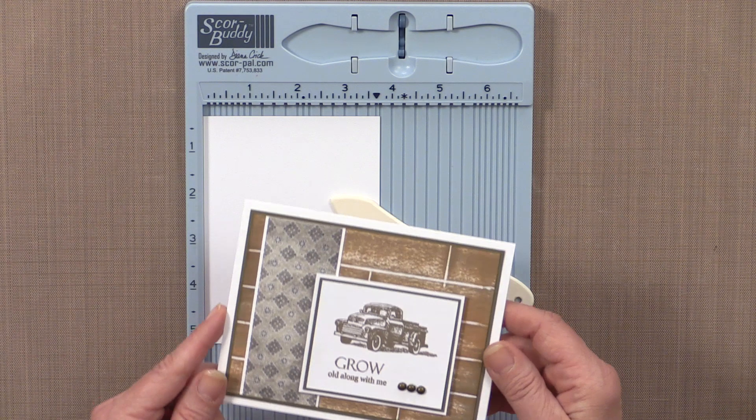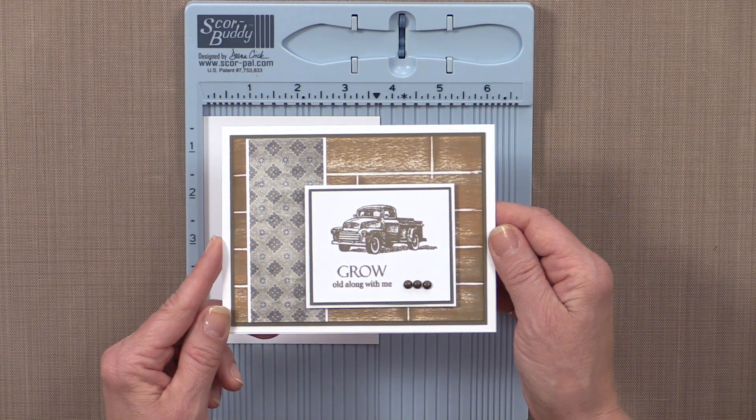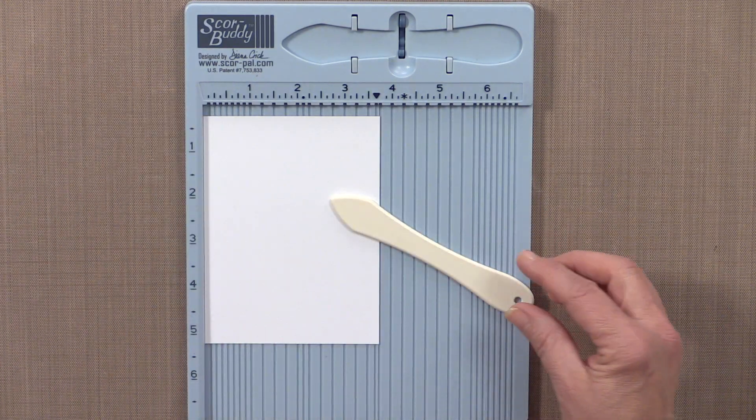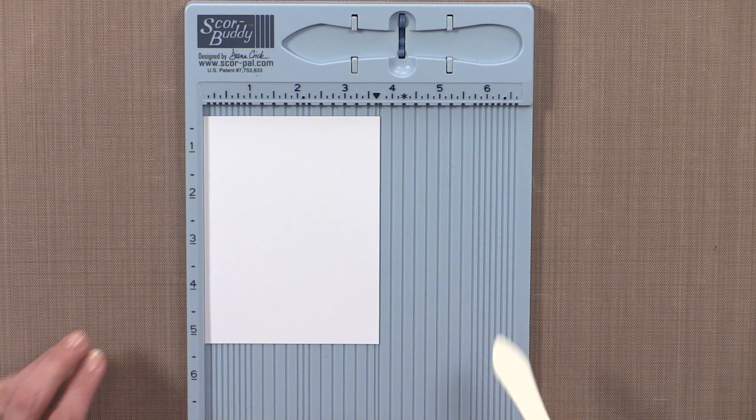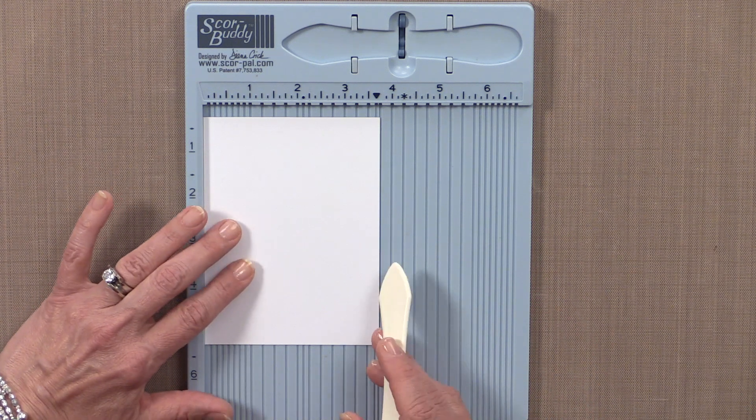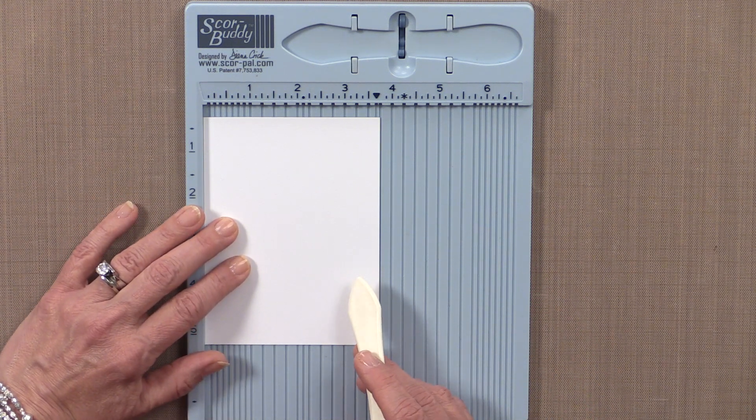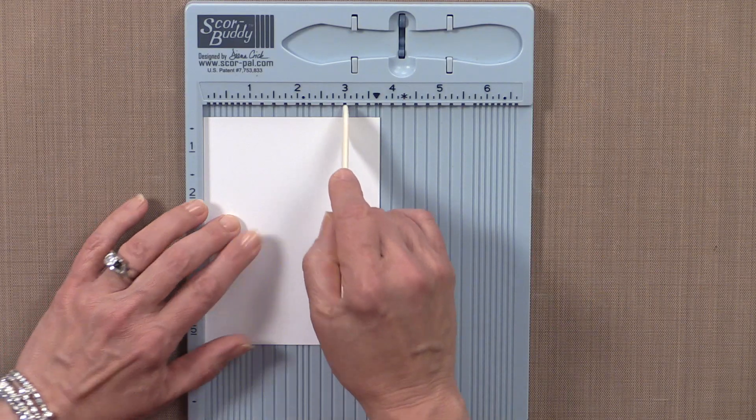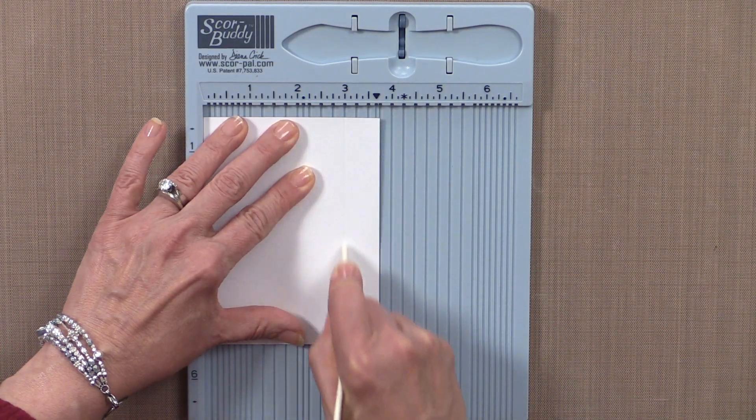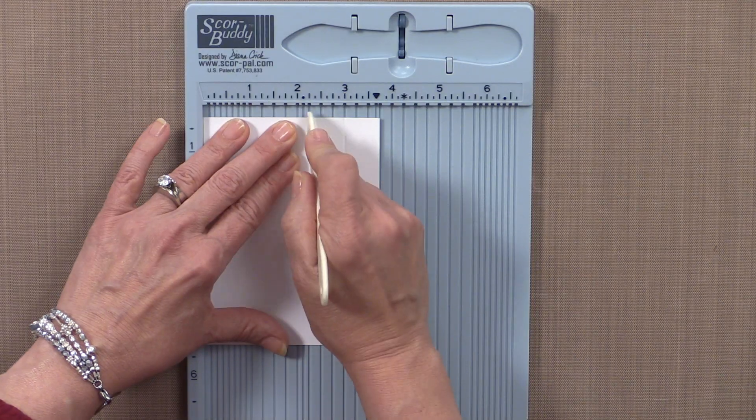The first technique I want to show you looks like large wood planks like you can see in this card. I've cut a piece of cardstock three and three-quarter inches by five inches. I'm going to use my score buddy to score three-quarter inch lines starting at the three-inch line. I always like to double score to make sure they're deep enough.